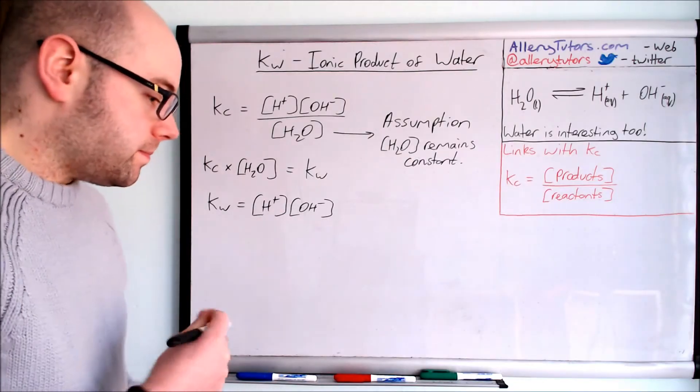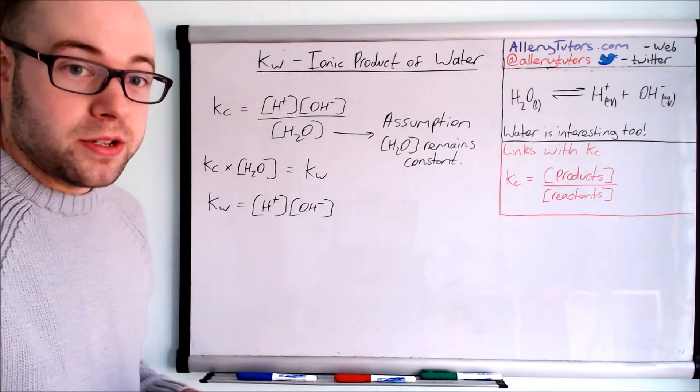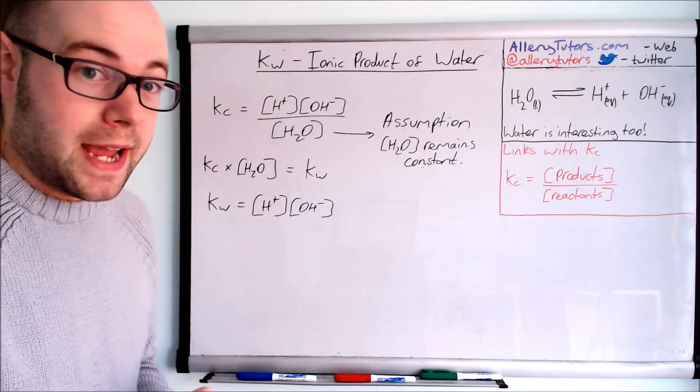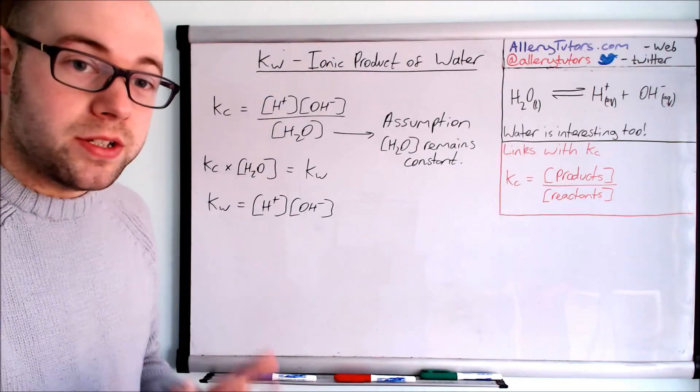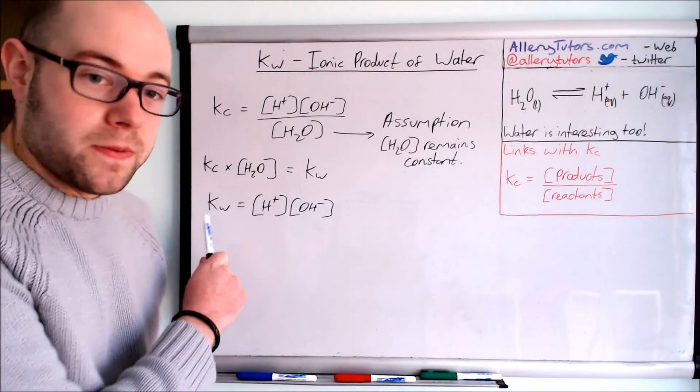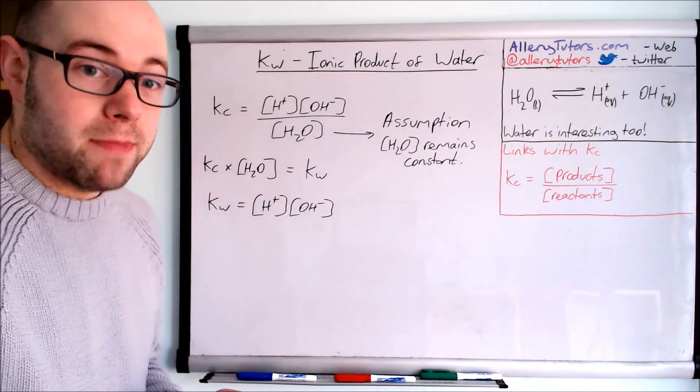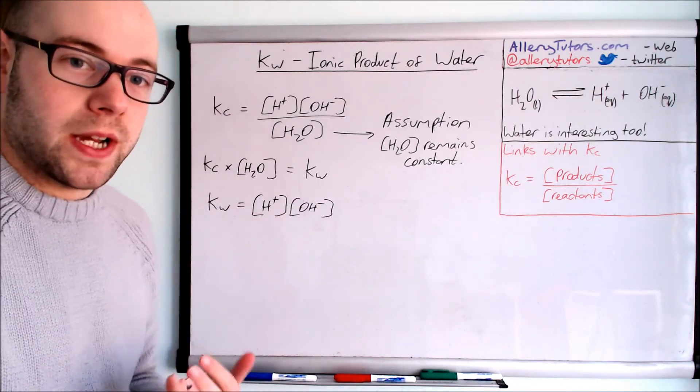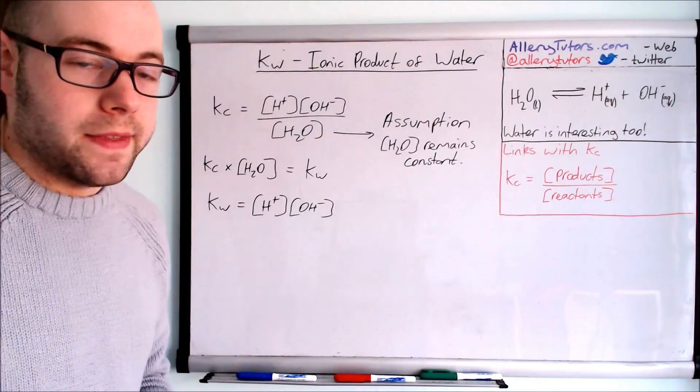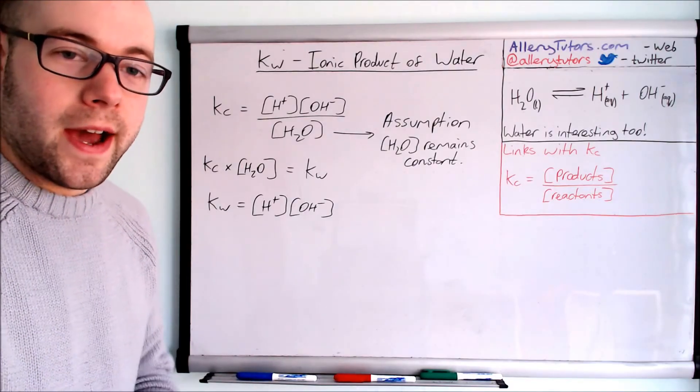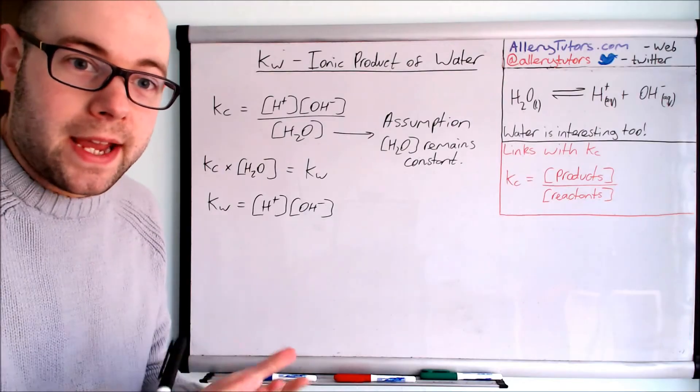This is quite useful because we can use this to work out pHs of solutions. If we know the value of Kw and we know the value of OH minus, we can rearrange this to work out the concentration of H plus, then put that into a pH equation and show the pH of a substance.